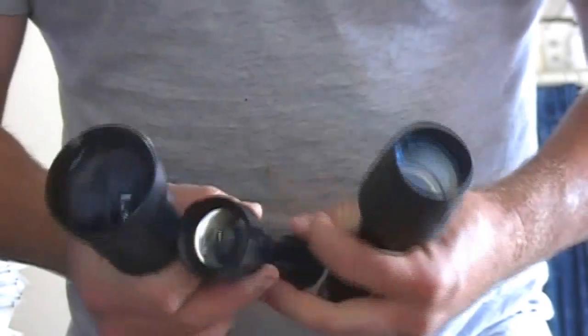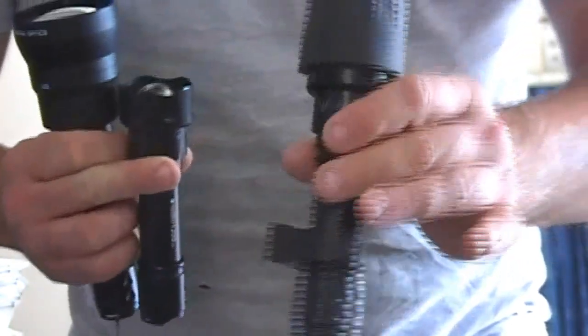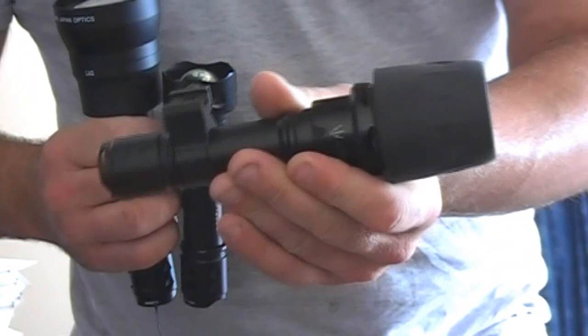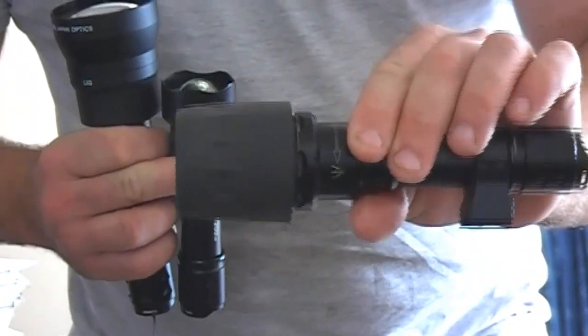OK, so here are my T20 torches. This is the one I use for hunting rabbits, because this is the only one with the infrared in.